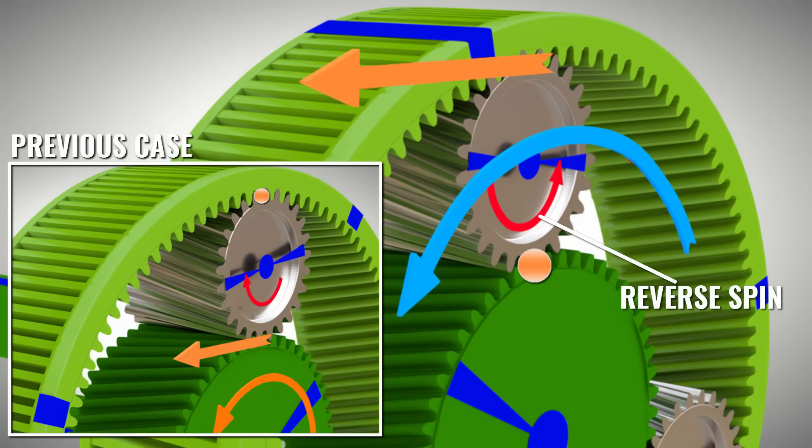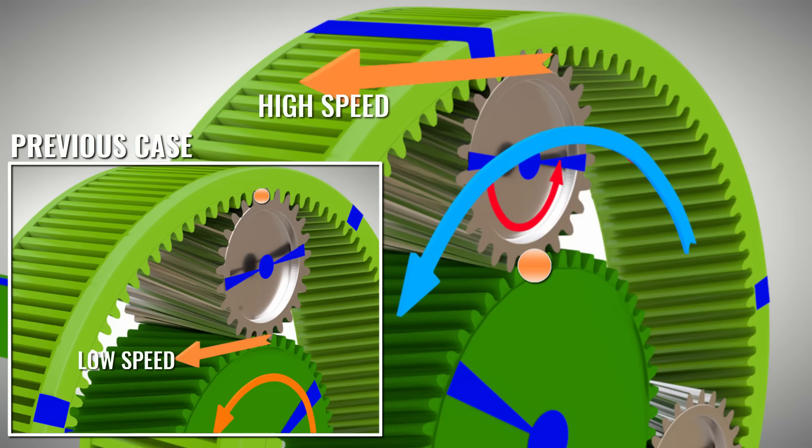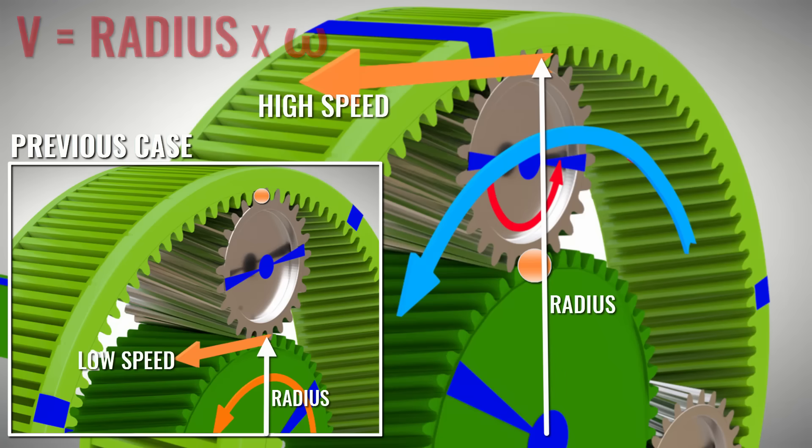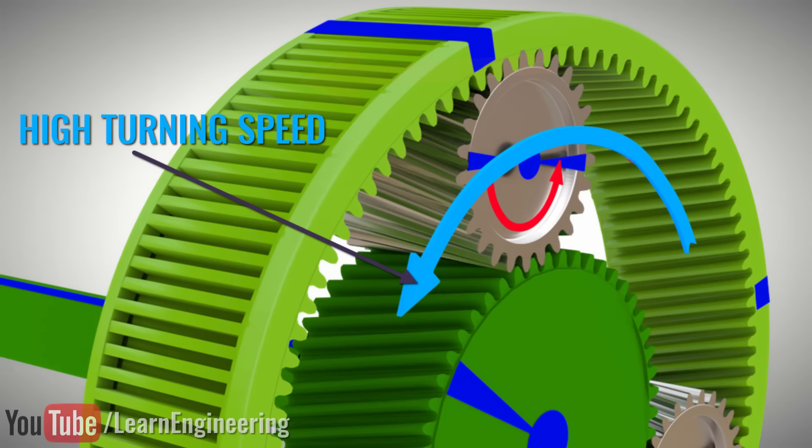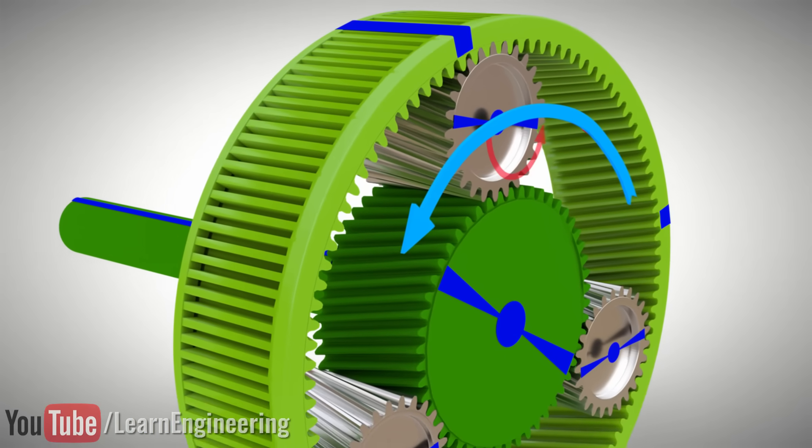However, this case has one more difference. The speed of point B will be higher than the speed of point A in the previous case. This is obvious as the ring gear radius is higher. This will make the planet gear spin and turn at a higher speed. Thus, the carrier will turn at a higher speed.